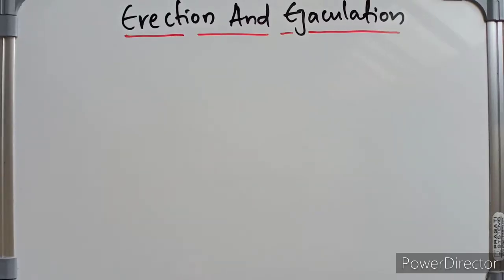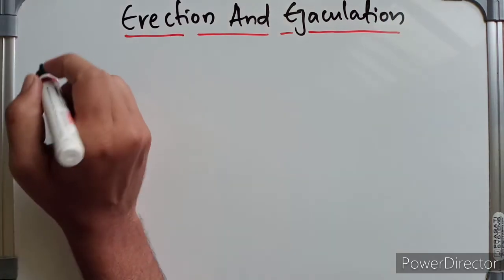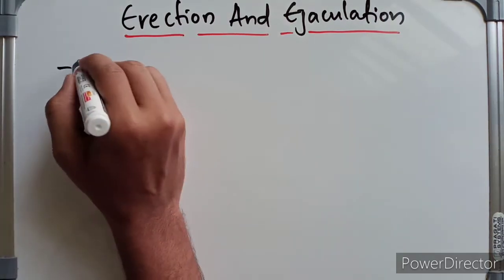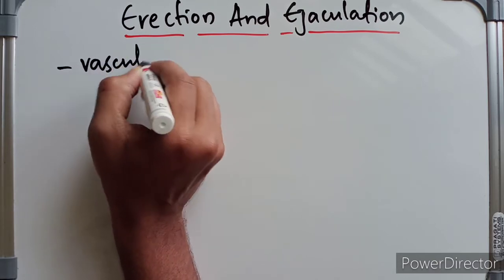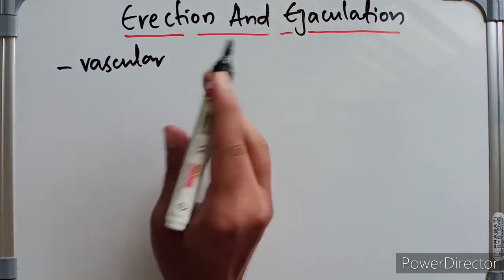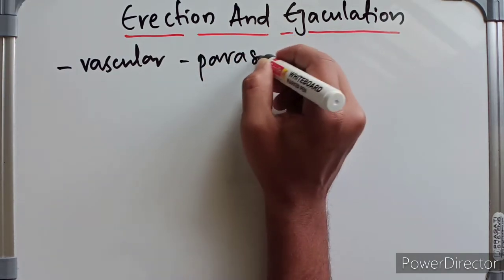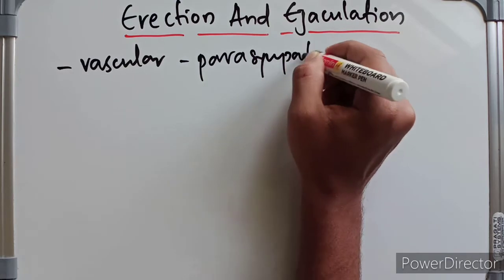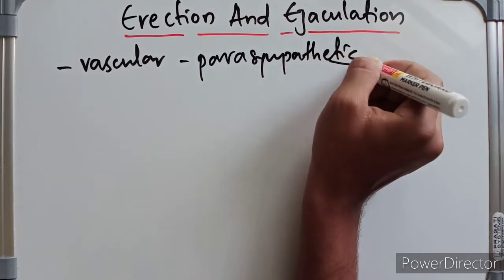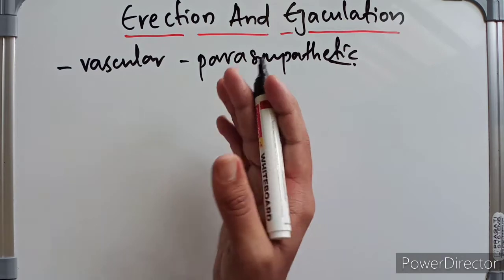Welcome. In this video we are going to look at the mechanism of erection and ejaculation, and the clinical significance of the penis. The mechanism of erection is purely a vascular phenomenon, purely vascular in nature, and occurs in response to parasympathetic stimulation. Parasympathetic stimulation activates the mechanism of erection.